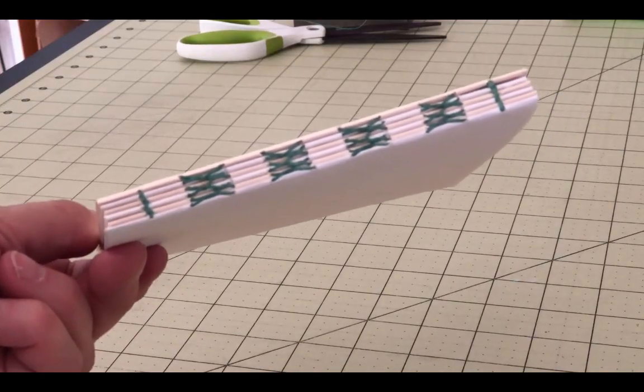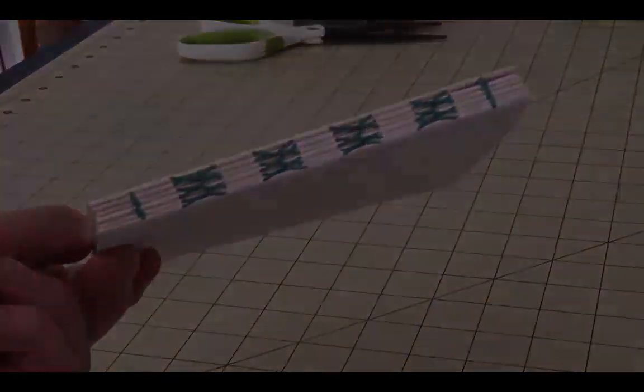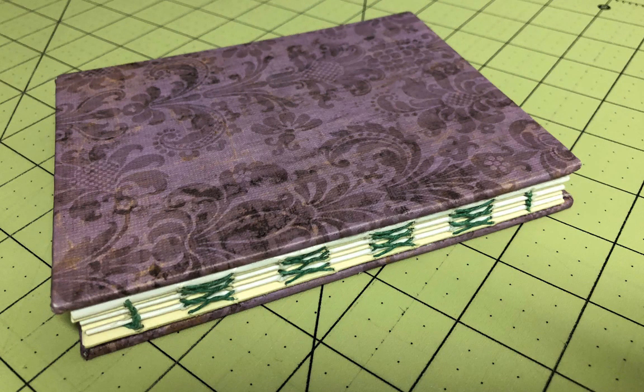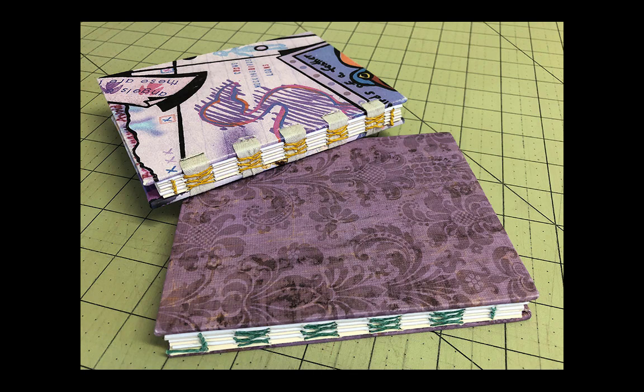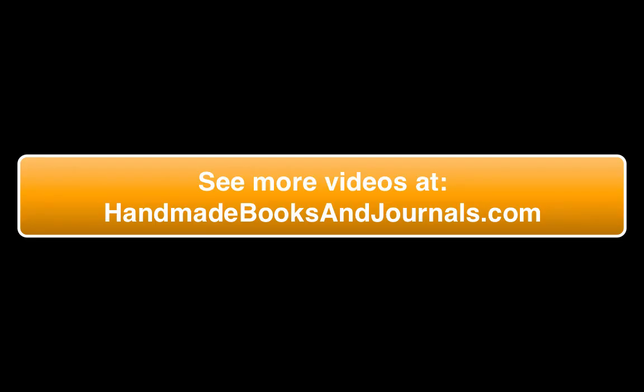You're done with the book block. Now you can add some covers, if you want, by simply gluing them to the first and last pages of the book, or if you want something that looks a bit more professional and fun, watch the video that shows a couple of techniques for adding covers as part of the construction process.